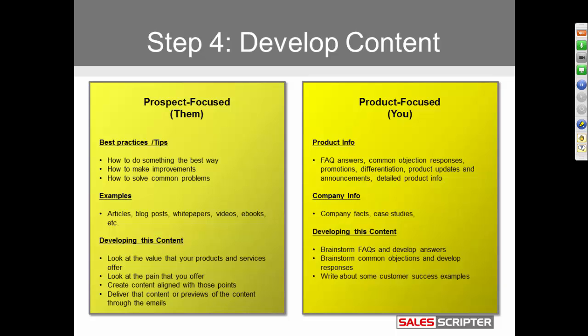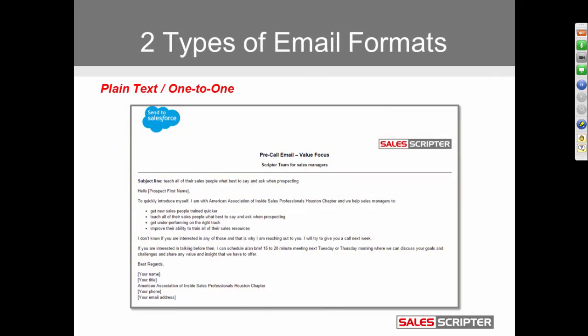Those are the two categories, and what you want to do is start creating content in both of them. This step may not be exciting — and I can pretty much guarantee you're not going to be thrilled about it — because it's really difficult. But it's critical to email drip marketing. If you're going to be dripping emails over time to somebody, there has to be content behind that. Keep the content separate and know which category each piece belongs to: prospect-focused or product-focused.